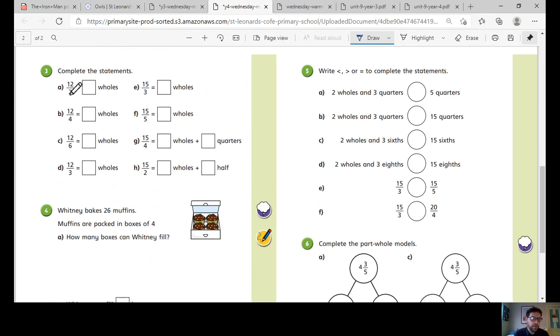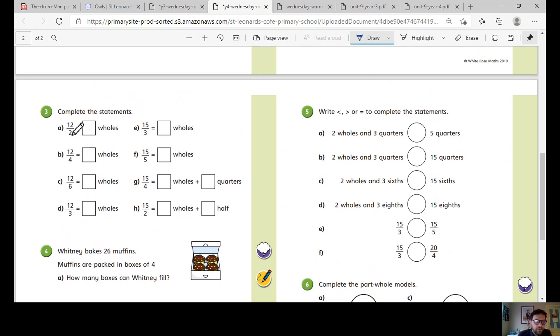Complete the statements. This is a few different ways to work on this. Twelve halves. So how many holes is that? The easiest way to do this is this number here, our denominator. So it's a two. We've got to work out how many twos go into twelve. Because we know our two times table.